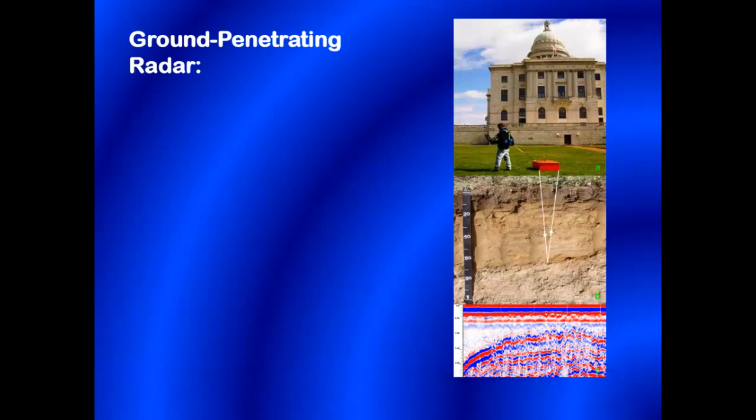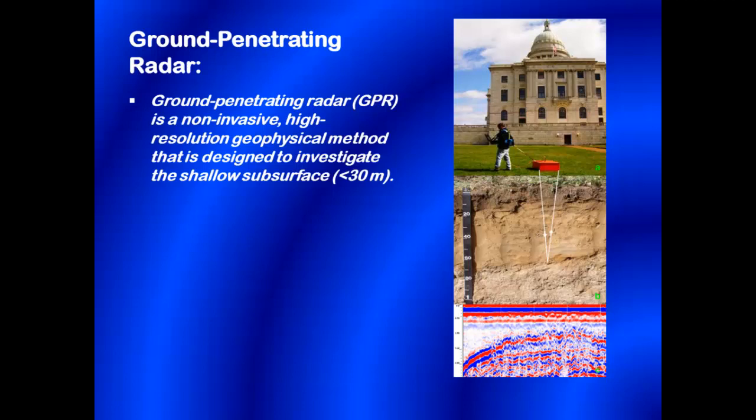Good day. I'd like to talk with you briefly about Ground Penetrating Radar and its use in soil investigations and in agriculture. Ground Penetrating Radar, or GPR, is an impulse radar system that is designed to penetrate Earth materials. It operates by transmitting short pulses of electromagnetic energy into the ground and measuring the time that it takes these pulses to travel from an antenna to a subsurface interface and back.